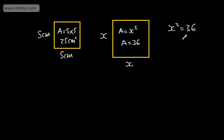So x squared will be equal to 36. This is an example of a quadratic equation. You're probably already shouting out the answer — quite clearly, the answer is going to be 6, as two of the same number that multiply to give 36.